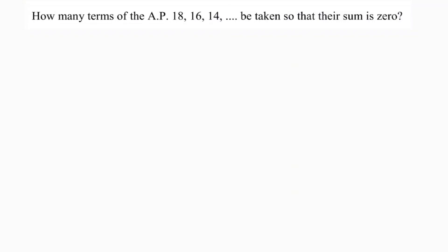How many terms of the AP 18, 16, 14, and so on, must be taken so that the sum is 0? Here the series is 18, 16, 14, and so on.